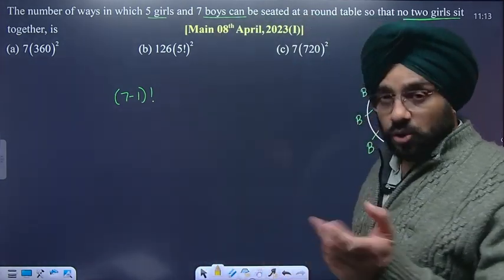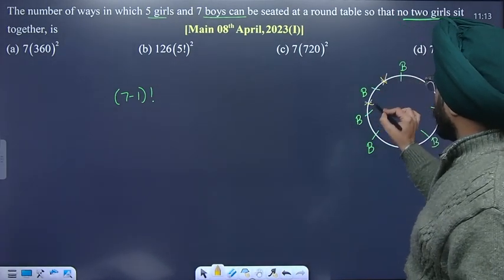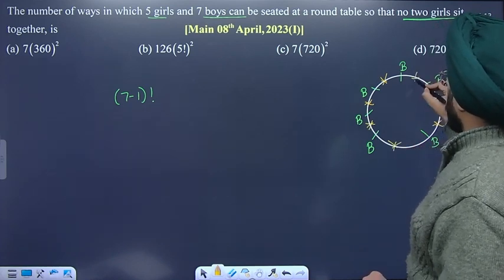Now there will be gaps. Now we have all these gaps: one gap, two gap, three gap, four gap, five gap, six gap, and seven gap. We have seven gaps.